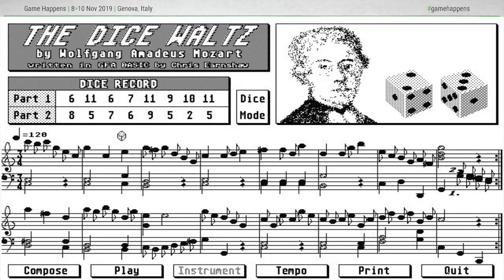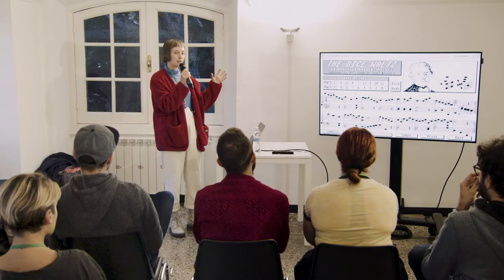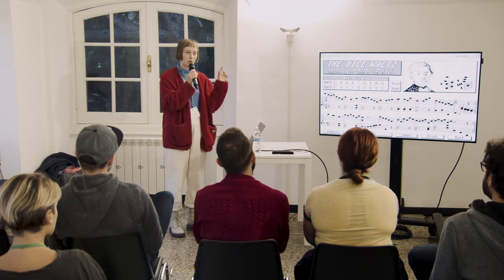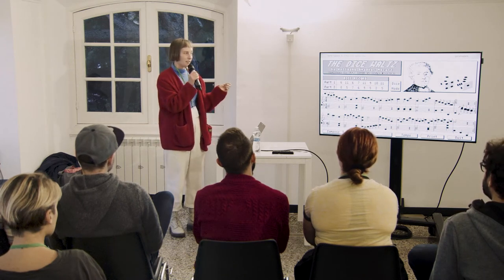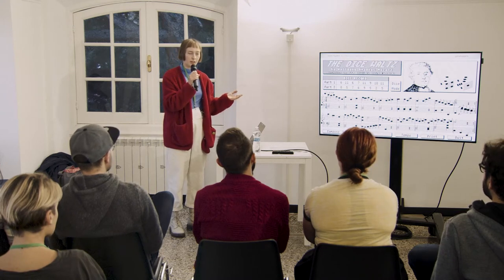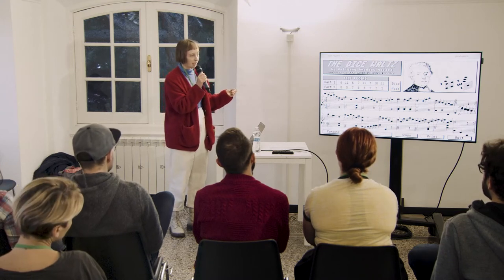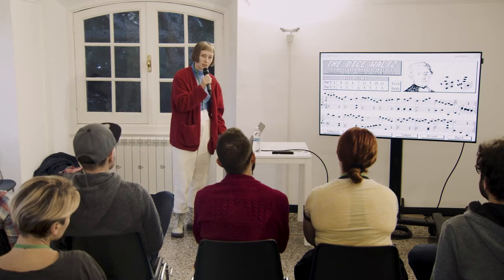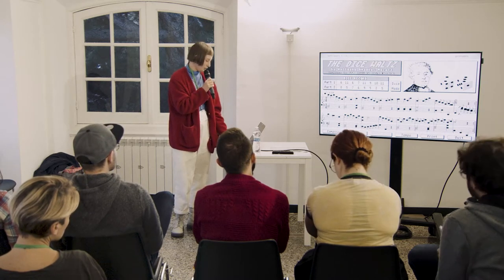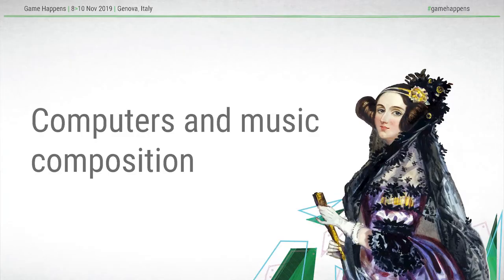For example, dice. In the 1700s in Western Europe, it was very popular to use dice to determine the order in which pre-composed snippets of music would be played. This form of randomization is still used a lot today, also in game music. But when we talk about more modern and contemporary algorithmic music, we usually talk about using computers to create the music.